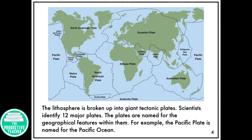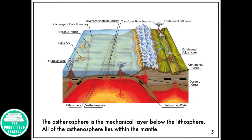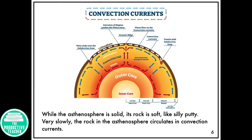For example, the Pacific Plate is named for the Pacific Ocean. The asthenosphere is the mechanical layer below the lithosphere. All of the asthenosphere lies within the mantle. While the asthenosphere is solid, its rock is soft — like silly putty.